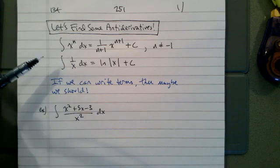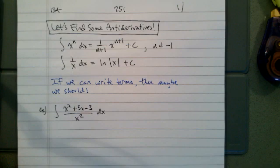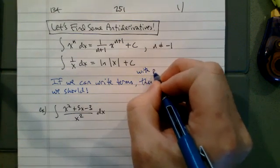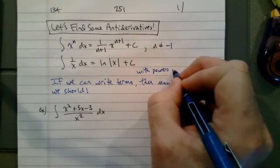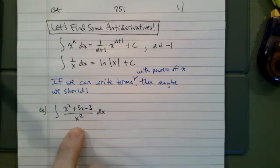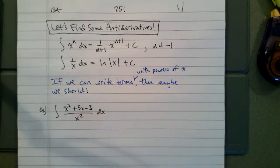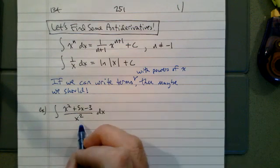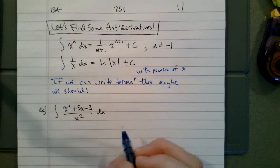What we get out of this is that if we can write terms with just powers of x, then maybe we should. So when we have an expression like x squared plus 5x minus 3 over x squared, we have this quotient, but we don't have a quotient rule for antiderivatives. But if we can write powers of x, then we should. So our strategy here is to distribute the 1 over x squared to the three terms.